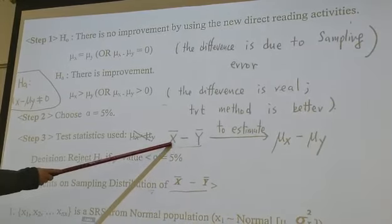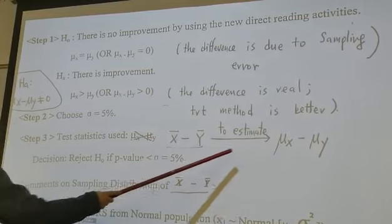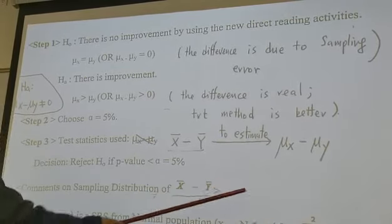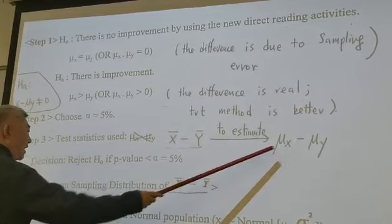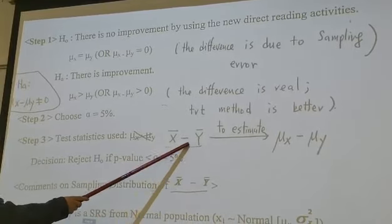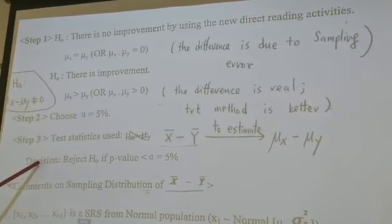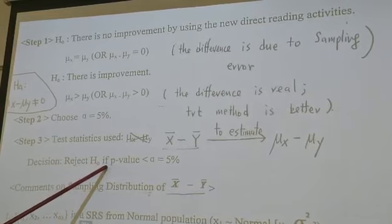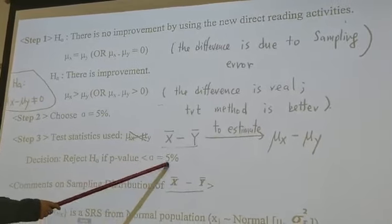Usually we use x̄ to estimate μx. We use ȳ to estimate μy. So the difference of μx minus μy is estimated by x̄ minus ȳ. And our decision is we're going to reject H₀ if p-value less than α equal to 5%.